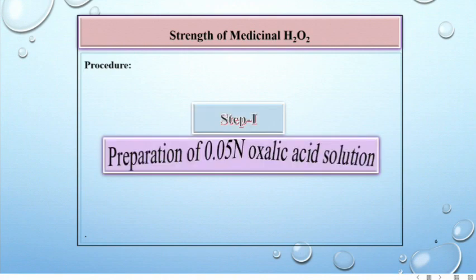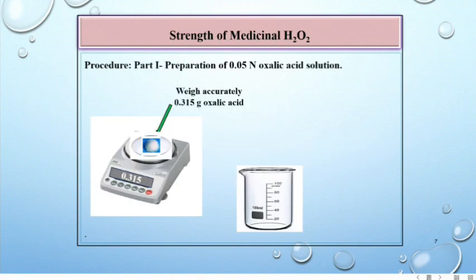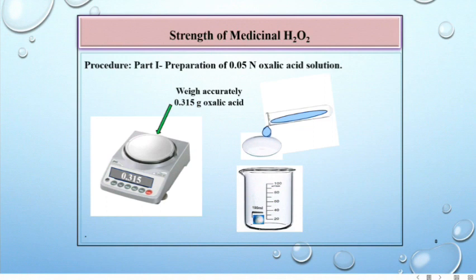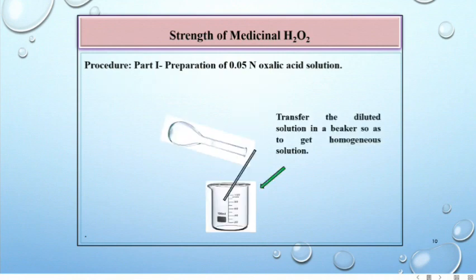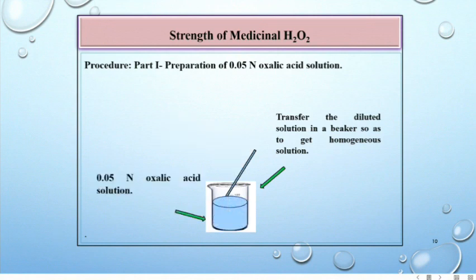First step is preparation of 0.05 normal oxalic acid solution. For that, weigh accurately 0.315 g of oxalic acid and then transfer it in a clean beaker. Wash the watch glass with minimum amount of water and then dissolve the substance in a little amount of water. Now, transfer this solution in 100 ml volumetric flask and make up the volume up to 100 ml by using distilled water. Transfer this diluted solution of oxalic acid into a beaker to get the homogeneous solution. So, this is 0.05 normal oxalic acid solution.